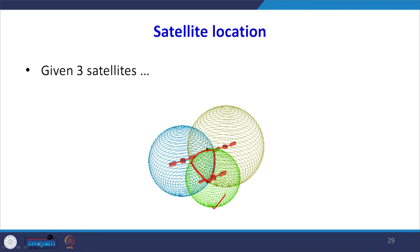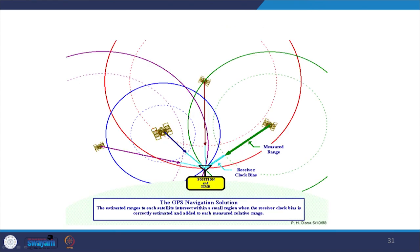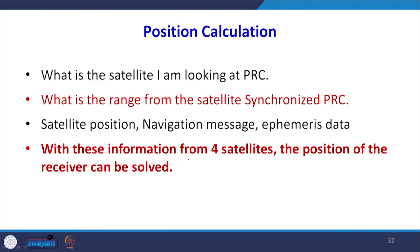If we have more and more satellites, this error triangle will further reduce and ultimately it will be a point feature. With four satellites at well-angled, well-distributed positions, we can get the correct position. The position calculation involves: the pseudorandom code identifying the satellite, the range from the satellite which is synchronized, the satellite position, and the navigational messages with ephemeris data. From these four satellites, the position of the receiver can be solved very easily.